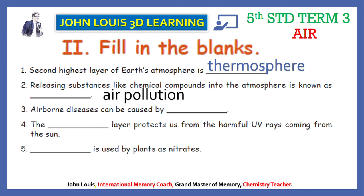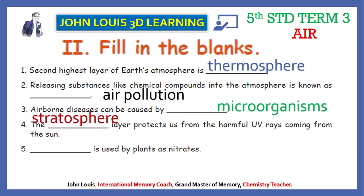Third blank: airborne diseases can be caused by microorganisms — learn the spelling correctly. Fourth: the dash layer protects us from harmful UV rays coming from the sun. The ozone layer is present in the stratosphere — learn the spelling correctly. Fifth: dash is used by plants as nitrates. Nitrogen is present in air, in the atmosphere, therefore plants absorb nitrogen and use it as nitrates.